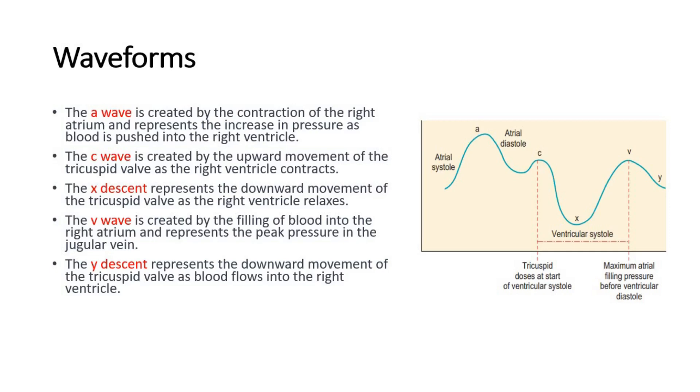The C wave is created by the upward movement of the tricuspid valve as the right ventricle contracts. The X descent represents the downward movement of the tricuspid valve as the right ventricle relaxes.